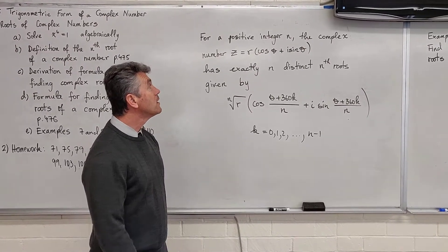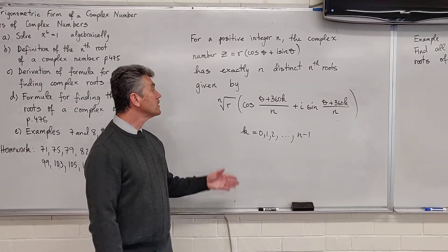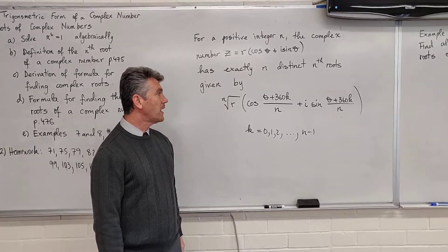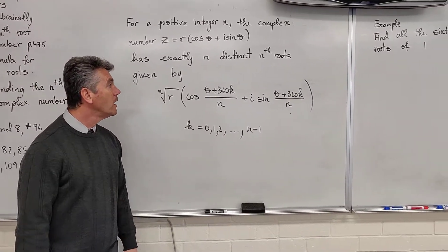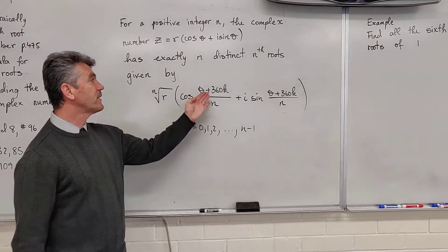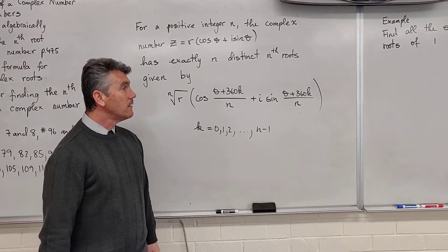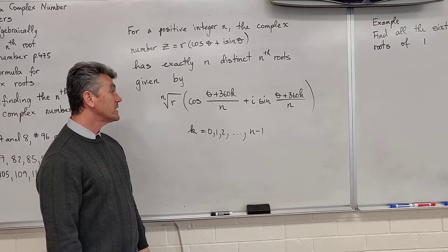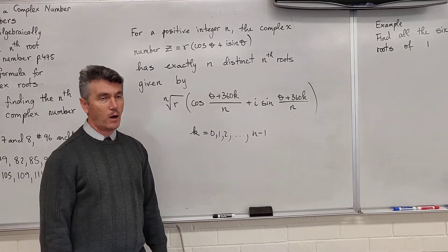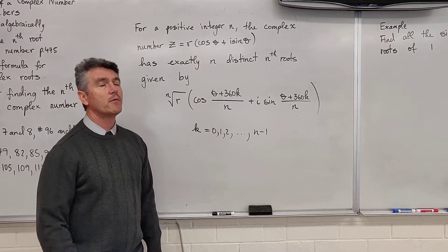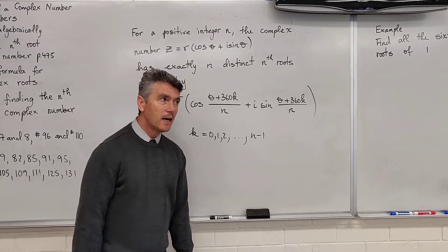This complex number z has exactly n distinct nth roots, and this is the formula to find those nth roots. The nth roots of z are equal to the nth root of r times cosine of (theta + 360k)/n plus i sine of (theta + 360k)/n. Here k is the integers from 0 to n minus 1, because from 0 to n minus 1 there are exactly n integers.